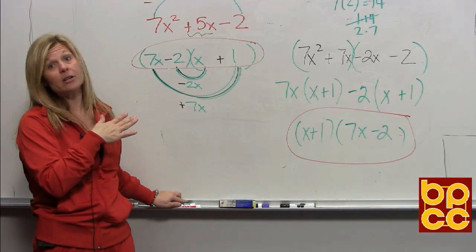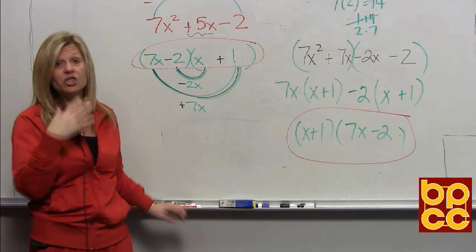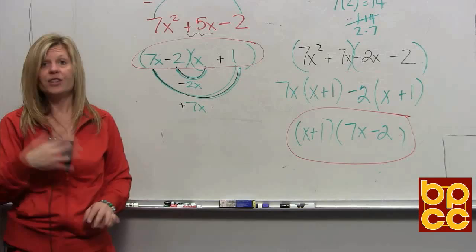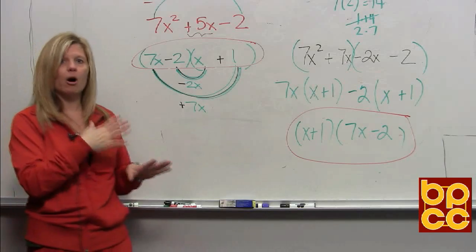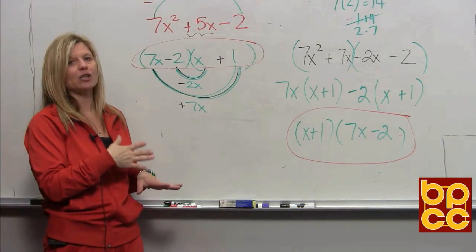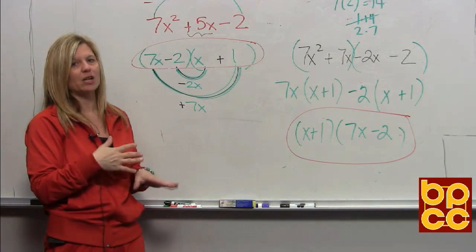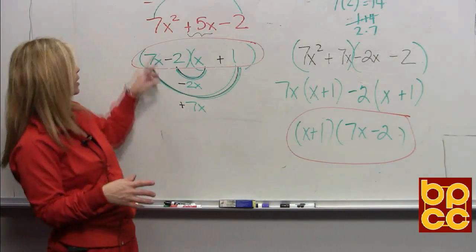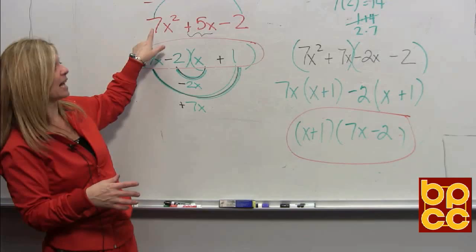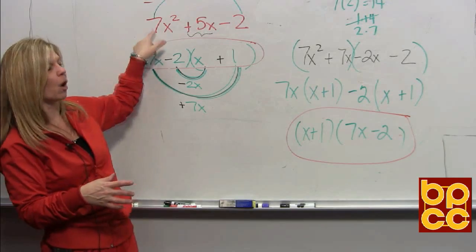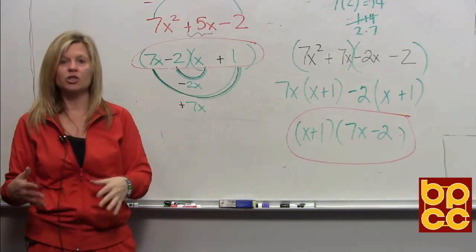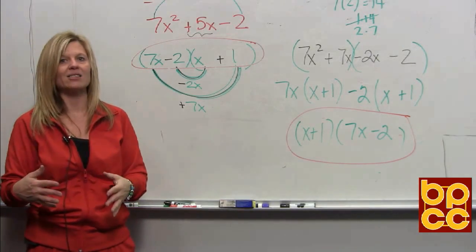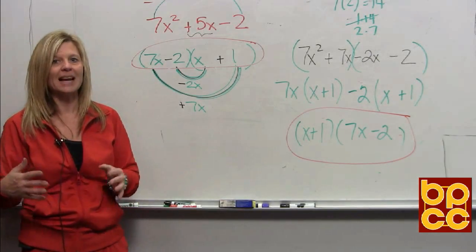There's no easy way to do this — it's just going to take practice. This is probably the hardest rule of factoring: factoring a trinomial that starts out with a coefficient that's not just a one. So just don't get frustrated. Just keep practicing. Thank you.